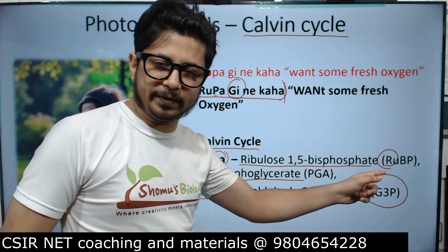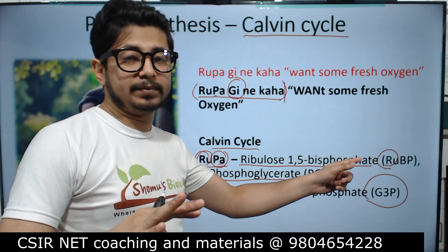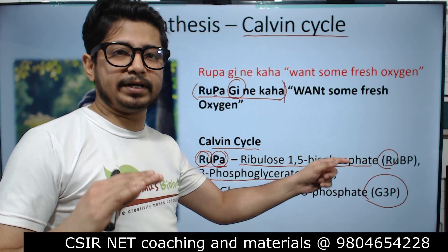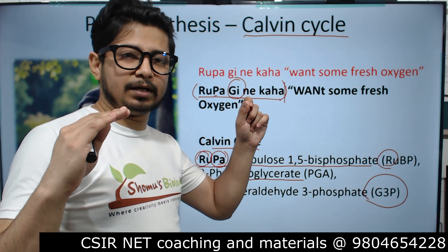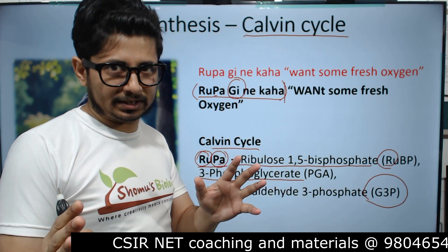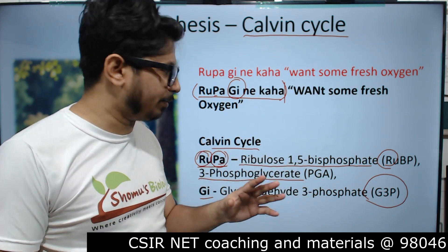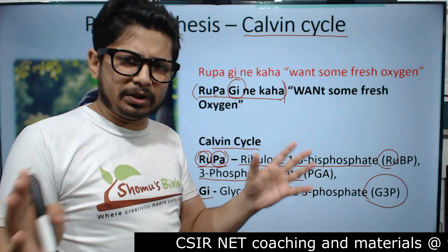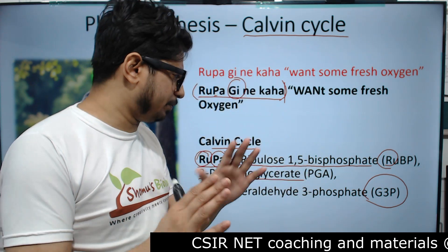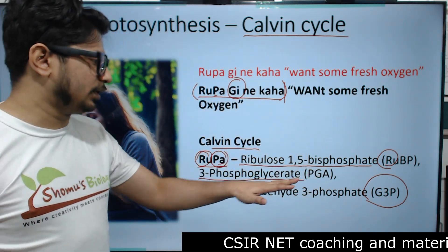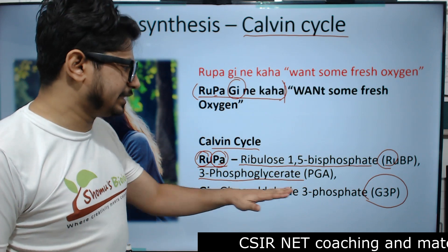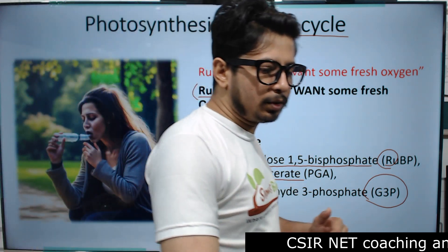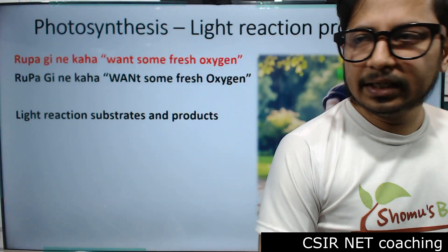For Ribulose 1,5-bisphosphate, the enzyme involved is Ribulose 1,5-bisphosphate carboxylase oxygenase — RuBisCO. 3-phosphoglycerate and glyceraldehyde 3-phosphate are the key intermediates. Now we move to the light reaction products.